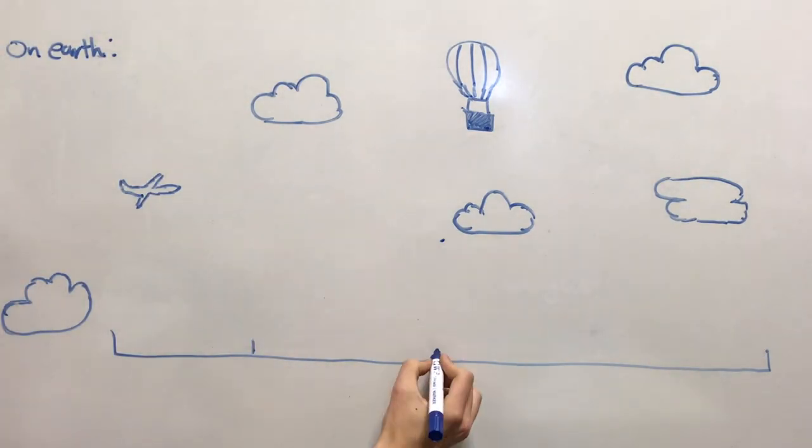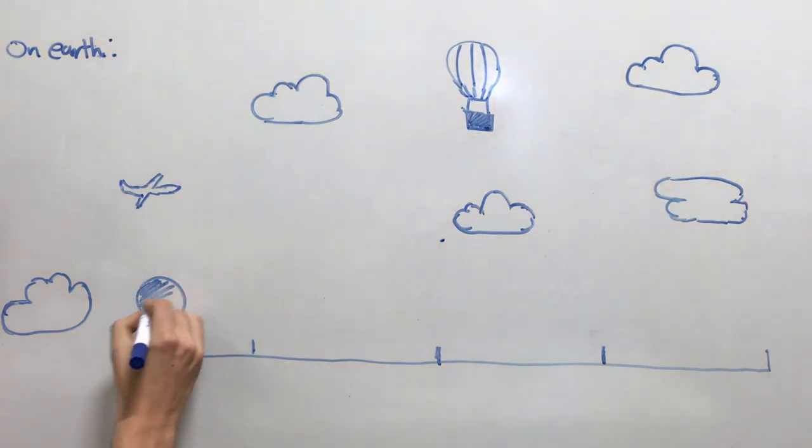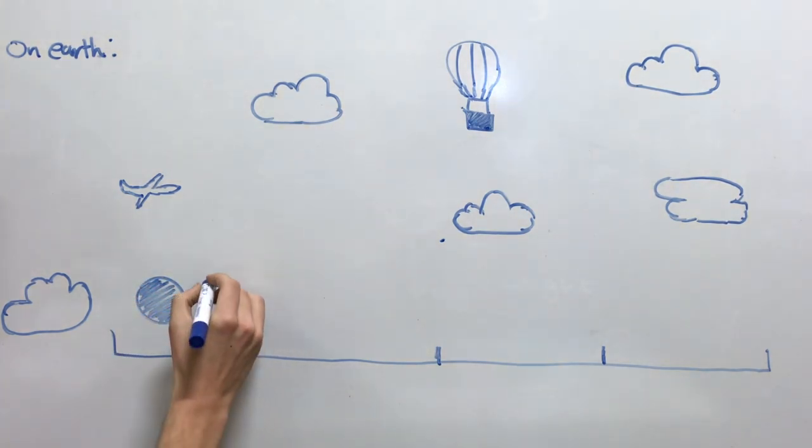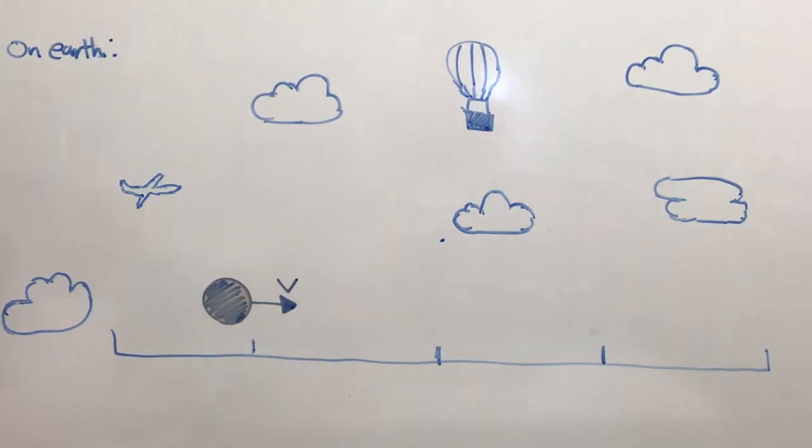However, for an object moving through the air on Earth, the motion is different because of air resistance. Air resistance produces a force that is opposite to the direction of motion and hence the object will slow down.